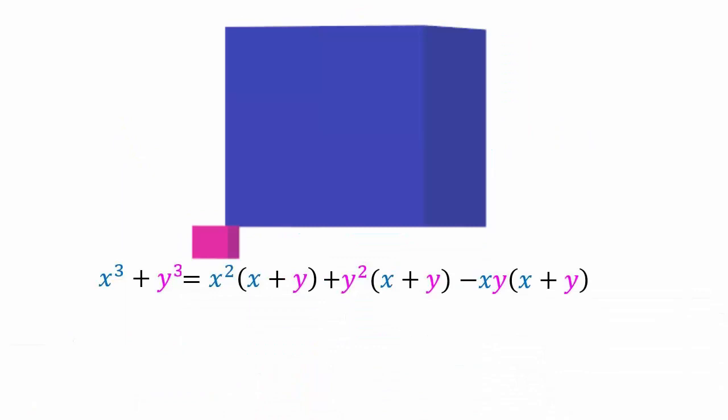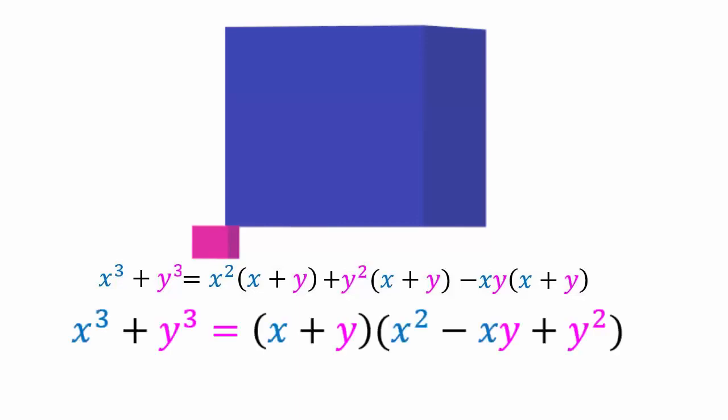Let's write that as a formula. For x³ + y³, if you look at the greatest common factor of all the terms, you get: (x + y)(x² − xy + y²). The order x² + y² − xy also works. That is our sum of cubes formula.